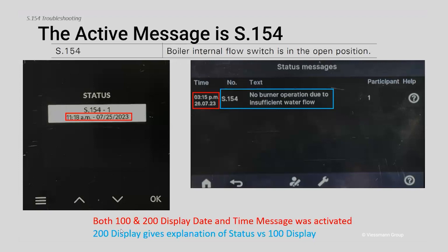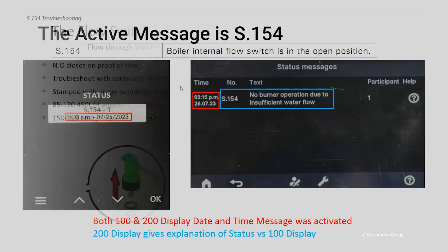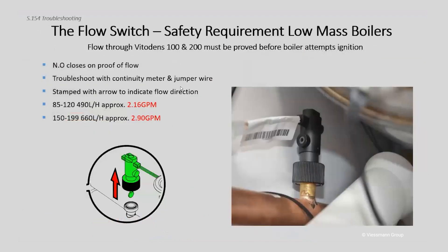With the 200, it gives a better, more full explanation — 'no burner operation due to insufficient water flow.' The primary focus of the S154 is that the flow switch is in the open position when the boiler would expect it to be in the closed position because we've got a call for heat. That would mean the pump has started, which means the flow switch should get the force of the pump's flow pushing that flow switch closed.